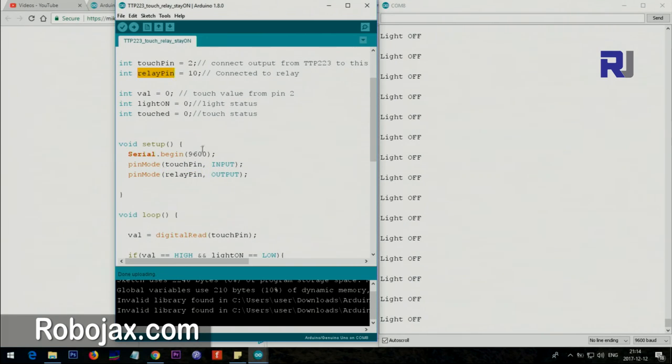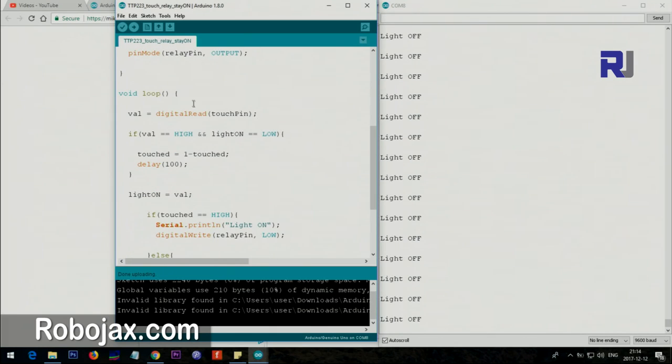Relay pin is defined as an output. Relay pin is mentioned here which is pin 10. Then we have inside the loop we are getting the touch pin which is 2, and then we are reading the result and storing it in this variable called val. Then we have an if condition which is from here to here. Inside if we say if val is high, which means if it has been touched, and if the light is equal low, which means light is off, then touched is the touch variable which we have.